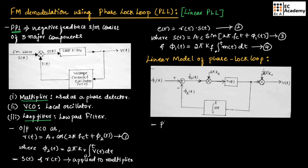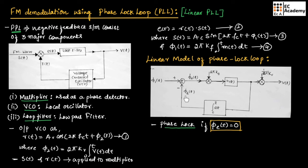The phase lock loop is said to be phase locked if φE(t) equals 0. This is the condition for phase lock. We know that φ1(t) = 2π Kf ∫ M(T) dT and φ2(t) = 2π Kv ∫ V(T) dT. Therefore, from the figure we can write φE(t) = φ1(t) − φ2(t).